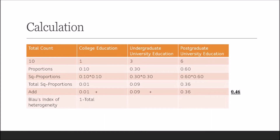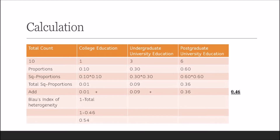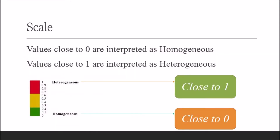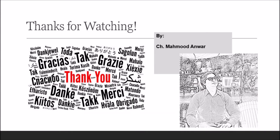Now Blau's Index of Heterogeneity is 1 minus the total, so 1 minus 0.46 equals 0.54. The Blau's Index of Heterogeneity for this sample is 0.54. Always remember that values close to zero are interpreted as homogeneous, and values close to one are interpreted as heterogeneous. I hope now you can easily check group demographic diversity for your other qualitative variables.